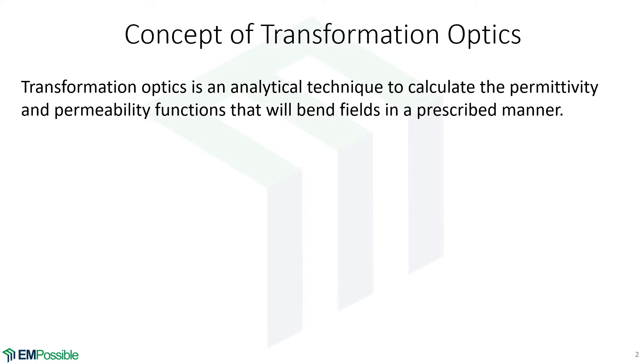The benefit of that is the shape of the cloak and the shape of the object that we are cloaking can be anything. When we're applying analytical transformation optics we're restricted to what we can describe with analytical equations. Here's the basic concept of transformation optics.